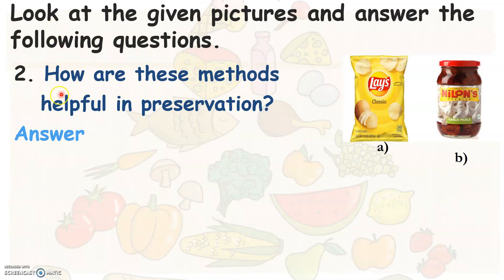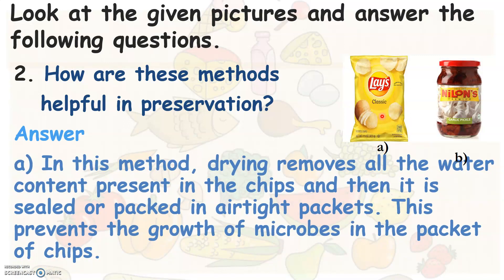Now, how are these methods of food preservation helpful? The method used in the first case is drying. Drying removes all the water content present in the chips, and then the chips are sealed or packed in airtight packets. This prevents the growth of microbes in the packet of chips.